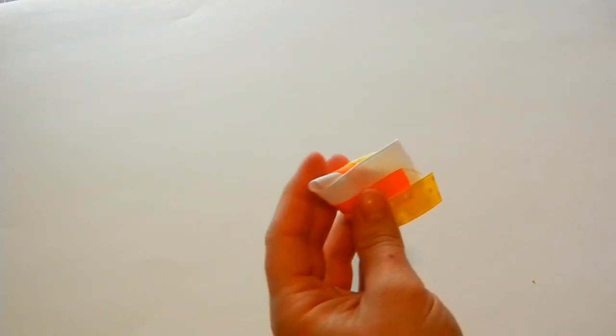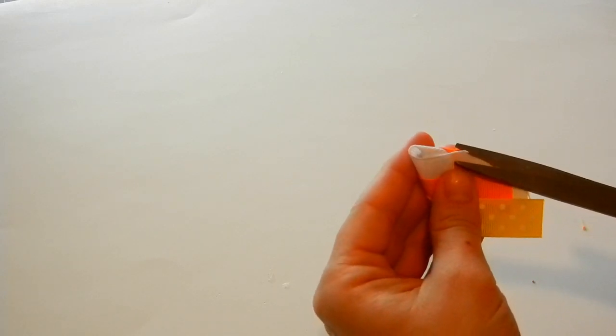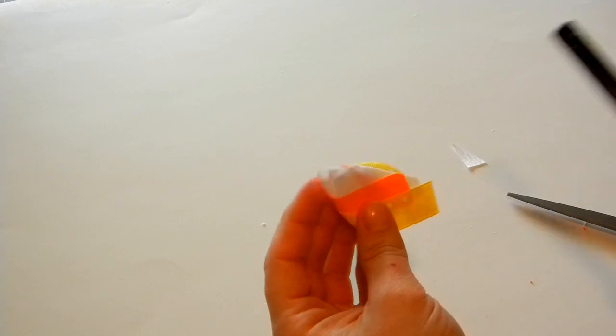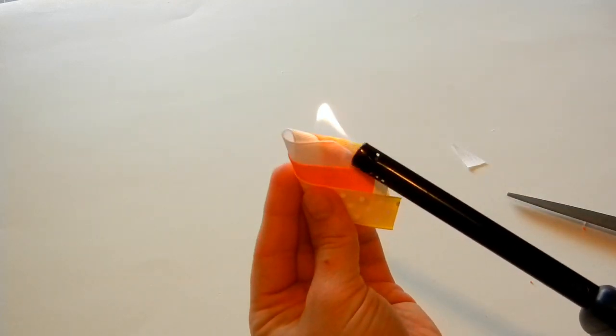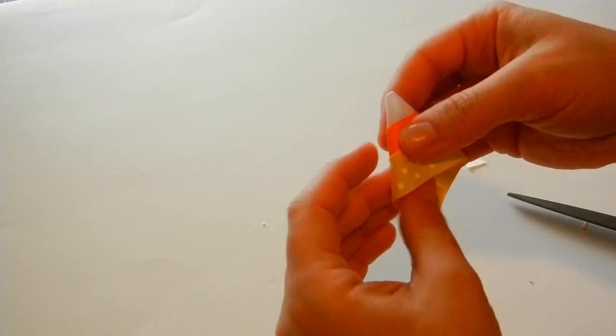And then bring it together. I don't want so much of that tail coming out, so I'm just going to cut it. Whenever you cut it, you've got to make sure to seal the ends of the ribbon so it doesn't fray.